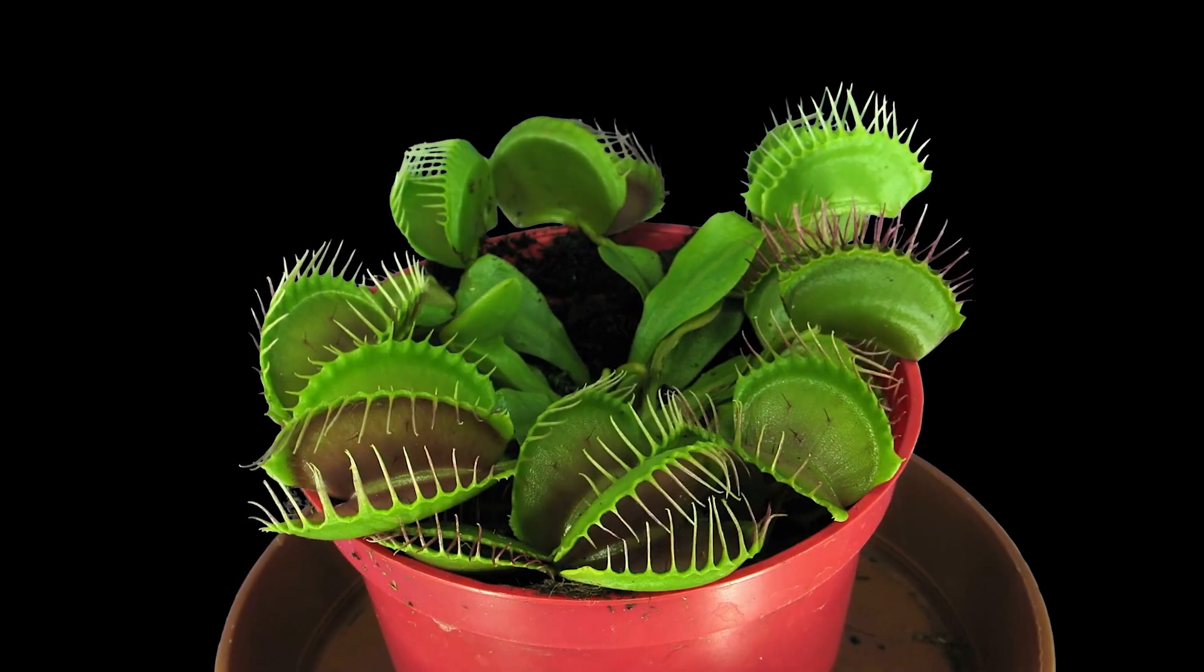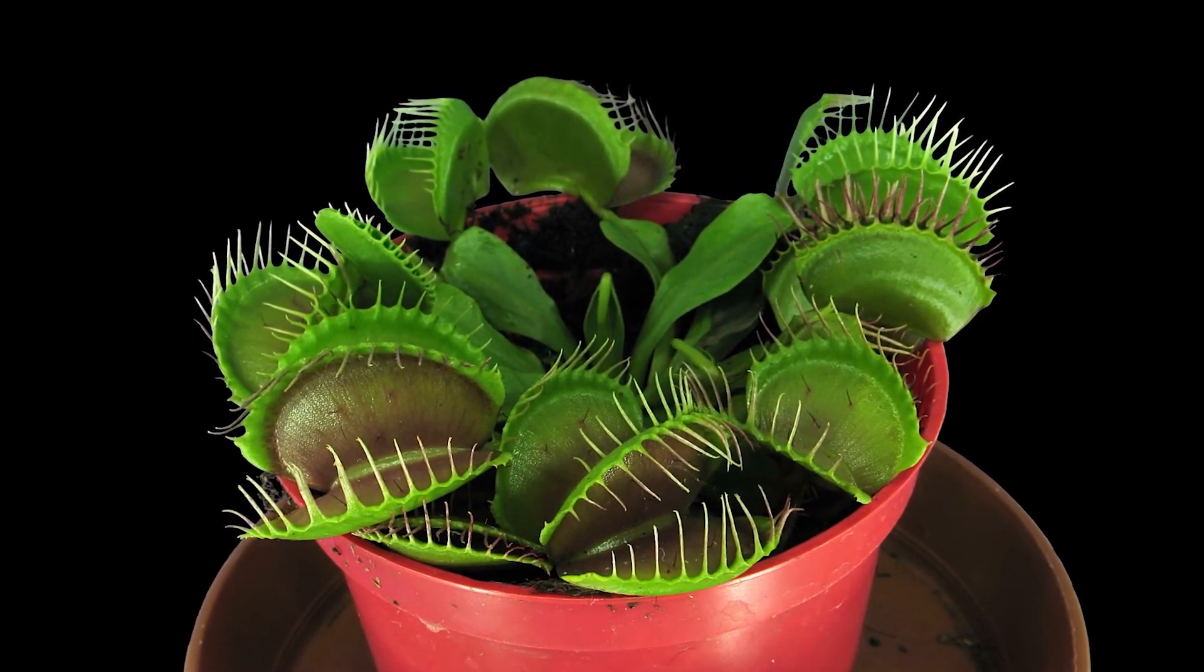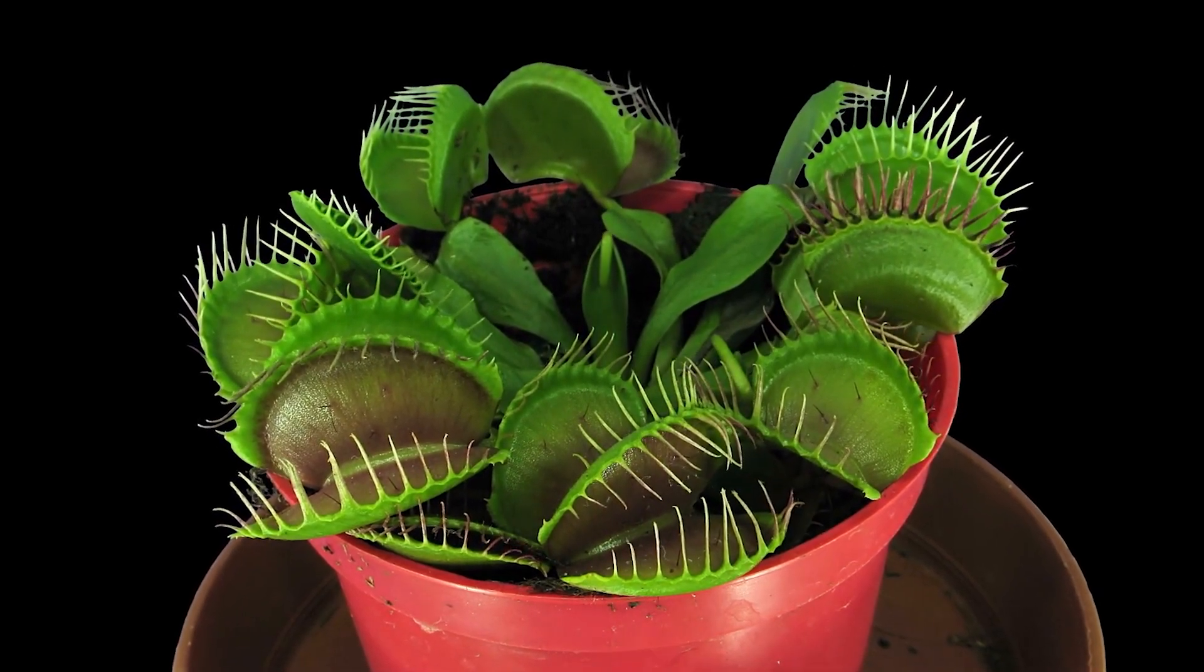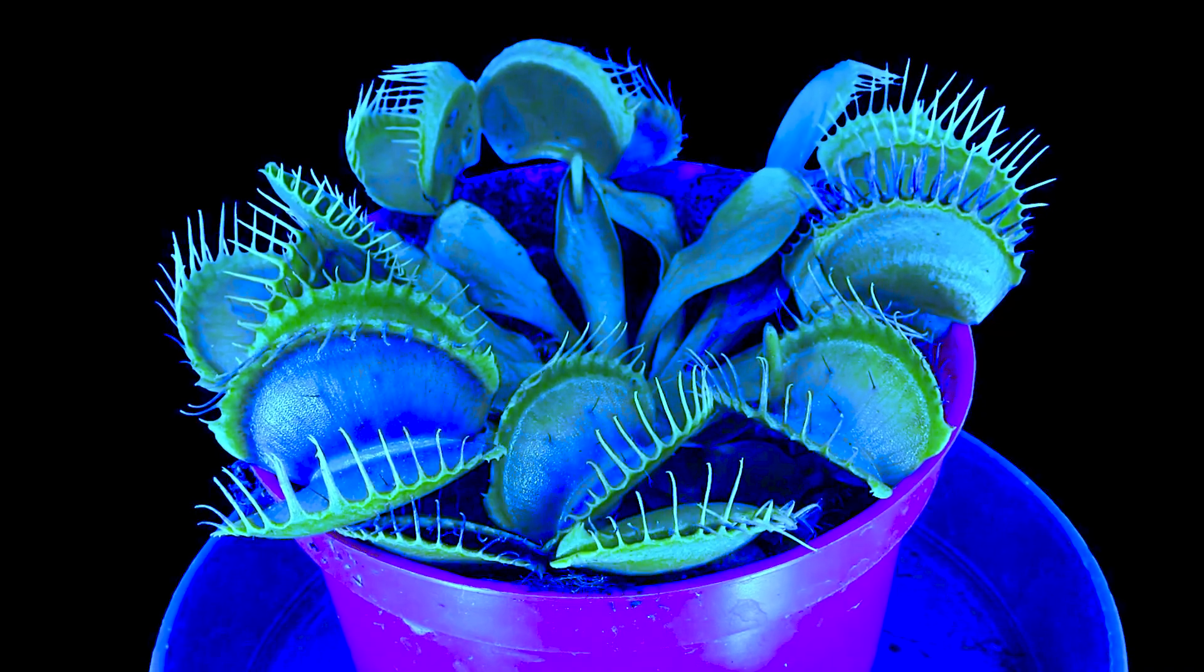On the darker side of attraction, it's thought that some carnivorous plant species, including the Venus flytrap, make use of biofluorescence to lure in unsuspecting insect prey, having been found to glow blue under ultraviolet light.